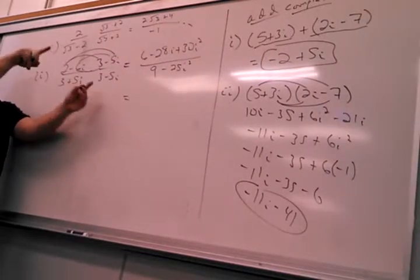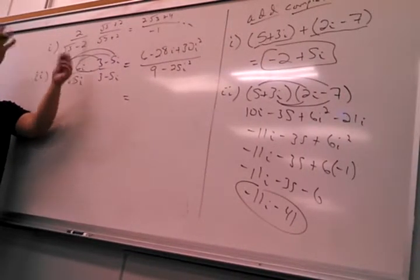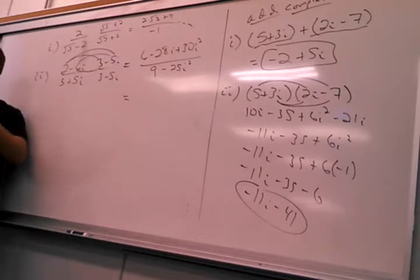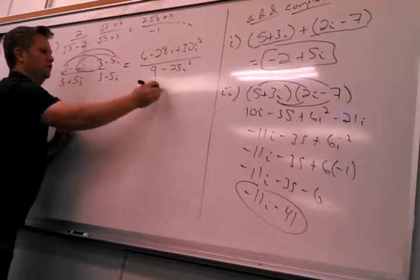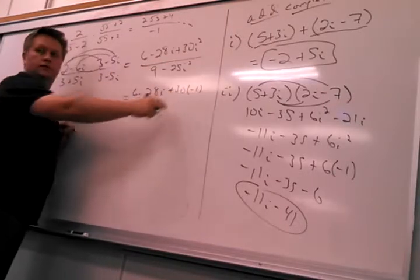This is exactly foiling. This is as if that's an x there, no problem. Then I look to see any i squares and I can replace it with negative 1, because that's what i squared is.